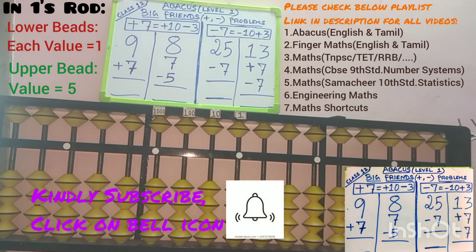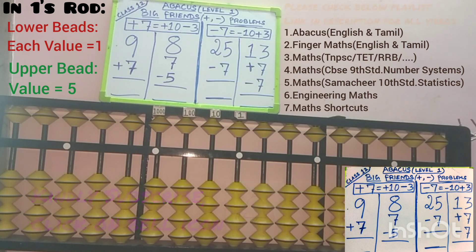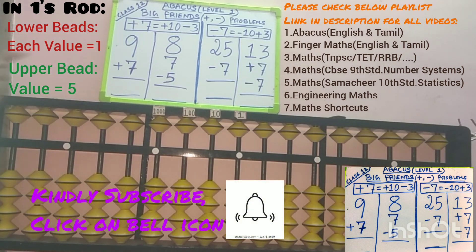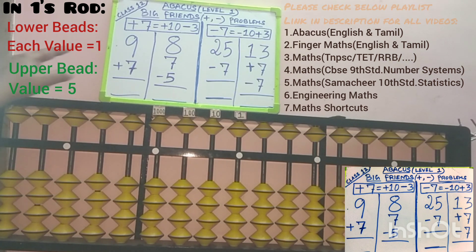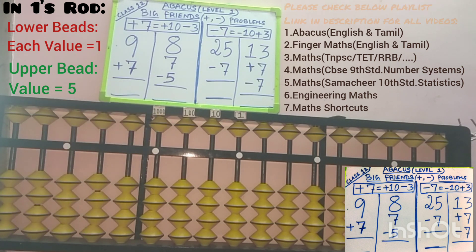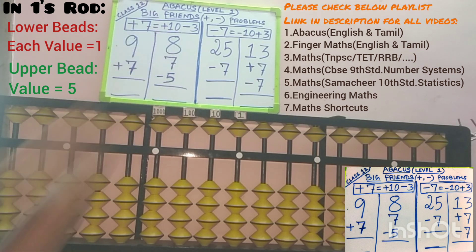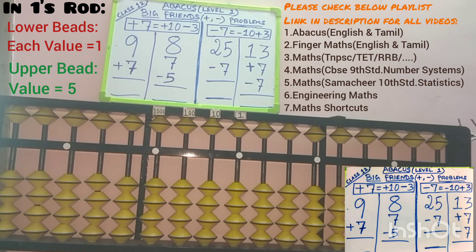In big friend, 10 is the bar and we know that 7 plus 3 equals 10, hence 7 and 3 are friends in the big friend concept. This is how we add 7 using big friend: plus 7 equals minus 3 and plus 10. So plus 7 equals plus 10 minus 3. And this formula is for removing 7: minus 7 equals plus 3 and minus 10. So minus 7 equals minus 10 plus 3.